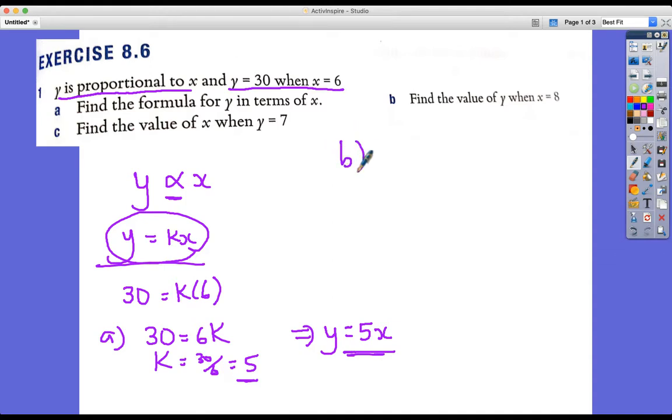Part B. Find the value of Y when X equals 8. So if you know this relationship here, Y equals 5X, find Y when X equals 8. All we have to do is put that in. 5 times 8 is 40.